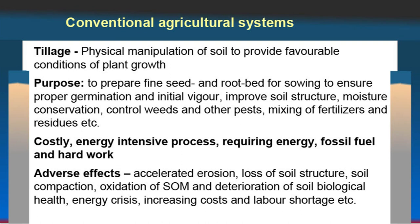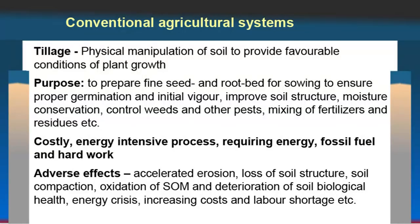For example, too much plowing may lead to accelerated soil erosion, loss of soil structure — as aggregates are broken down — resulting in poor soil structure or single grain structure. Soil compaction occurs, as does oxidation of soil organic matter because repeatedly adding oxygen into the soil accelerates decomposition of organic matter. Deterioration of soil biological health occurs particularly when too many pesticides are used. Energy crisis arises if doing 4-5 plowings by tractor or animal power. There are many issues with the conventional agricultural system and we need to change it.